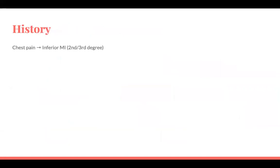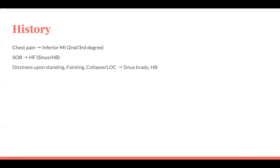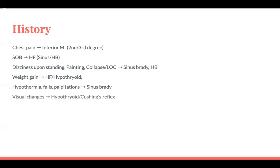In the history for bradycardia — if they have chest pain, think inferior MI, which is particularly known to cause second and third degree AV block. It's quite common and usually clears up on its own. However, anterior MI and heart block is a particular concern requiring intervention. Shortness of breath — both sinus bradycardia and heart block can lead to heart failure. Dizziness on standing suggests orthostatic hypotension; collapse, loss of consciousness, and feeling faint can occur with both sinus bradycardia and heart block. Weight gain — think heart failure decompensation or hypothyroid. Hypothermia and visual changes — hypothyroid and Cushing's.